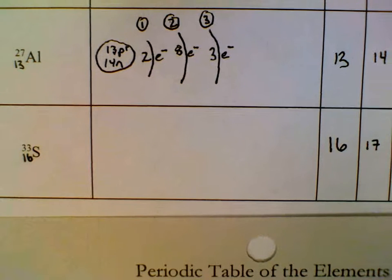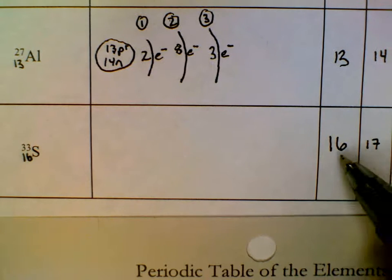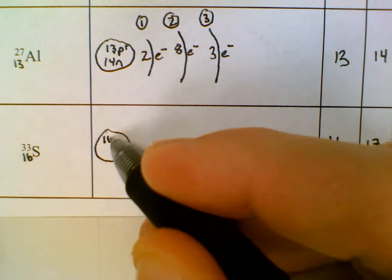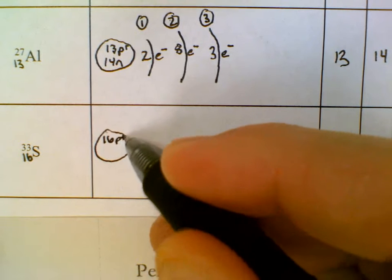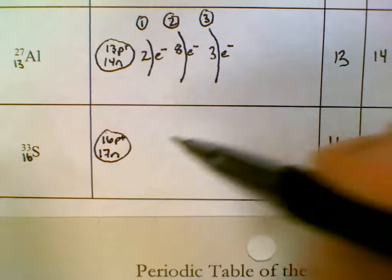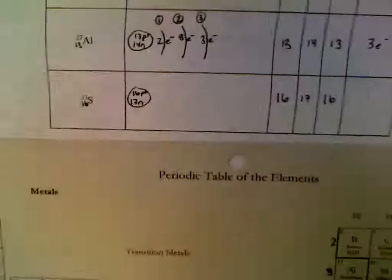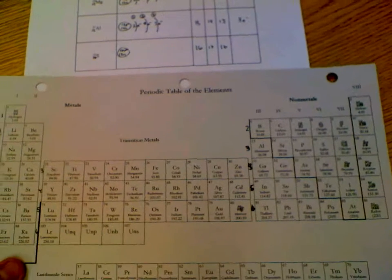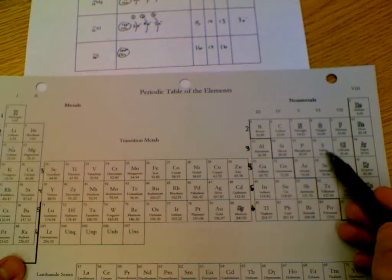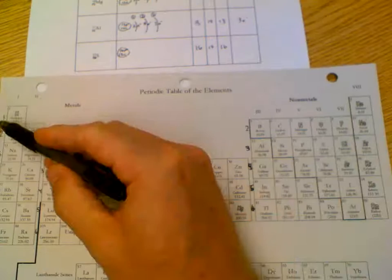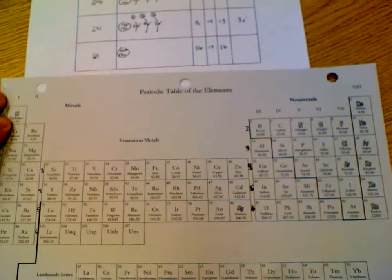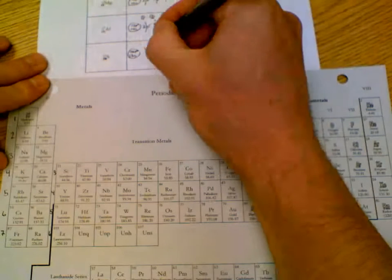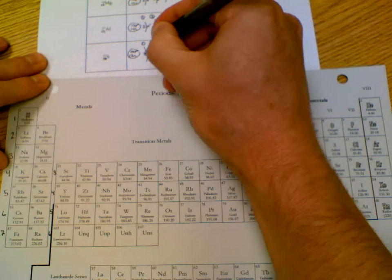Last one on our sheet is sulfur. Sulfur, it says, has 16 protons, 17 neutrons. That's what my nucleus will reflect. 16 protons, 17 neutrons. We will zoom out, see the whole periodic table. Sulfur exists right here on the periodic table, so that's where I need to stop. I'm going to start at my top left. Energy level 1, as it says next to my period. So energy level 1, 2 electrons.